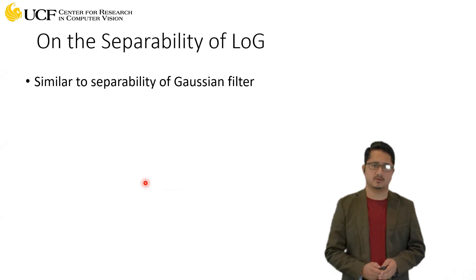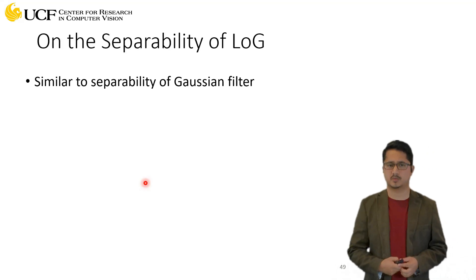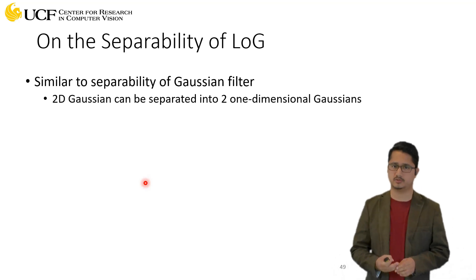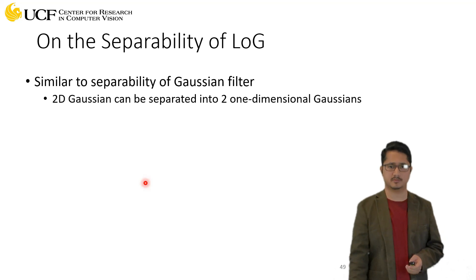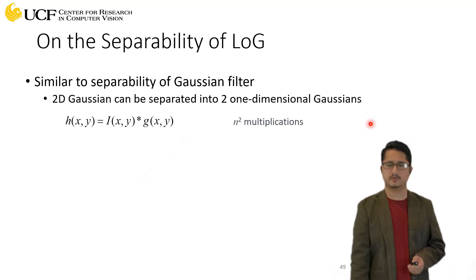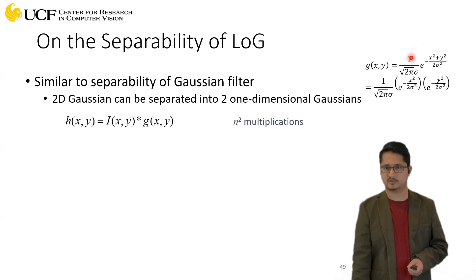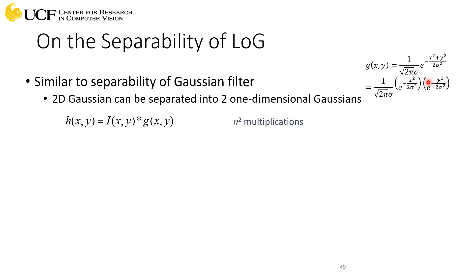Let's quickly see how we can optimize some of these steps. There was a good question from a student in today's office hours — we talked about how we can separate a 2D Gaussian into two different one-dimensional Gaussians. If you look at the Gaussian equation shown here on the top right, this is a two-dimensional Gaussian equation. From high school math, you can break this exponent into two different terms, because addition in an exponent converts to multiplication. So you can separate the x-squared term and the y-squared term.